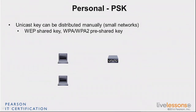So in both cases, it's a secret string that you put on the AP and on the clients, that is going to be used as a source from which encryption is going to be derived. And as you prove that you have that string, that you have that key, that proves that you have the right to access the network, and that key is used as a form of authentication.